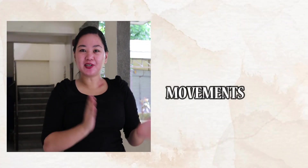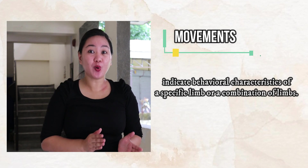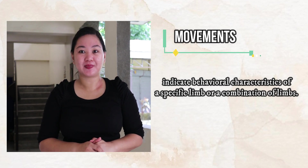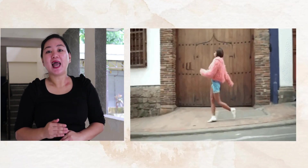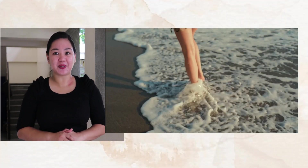Movements. In the motor learning and control literature, the term movements indicates behavioral characteristics of a specific limb or a combination of limbs. In this sense, movements are component parts of skills and actions. A variety of different limb behavior characteristics can occur that still enable a person to walk successfully. For example, our limbs move differently when we walk on a concrete sidewalk compared to when we walk on an icy sidewalk or a sandy beach. However, although the actual movements may differ, the skill we perform in each of these situations is walking.